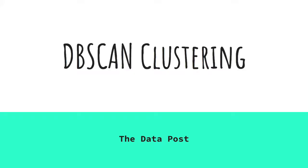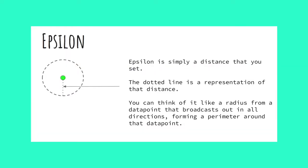DBSCAN is a clustering technique which can cluster any shape. It is a widely used algorithm and only relies on two parameters: epsilon and minimum points. Epsilon is a distance parameter. You can think of it like a radius from a given data point that broadcasts out in all directions, forming a perimeter around the data point.